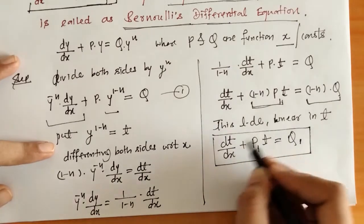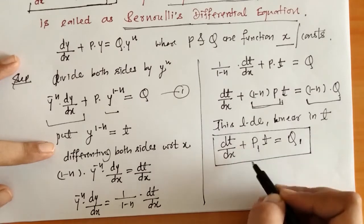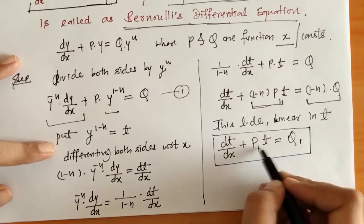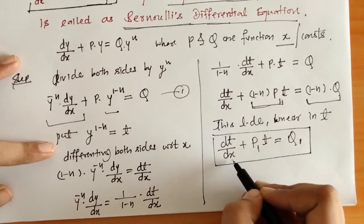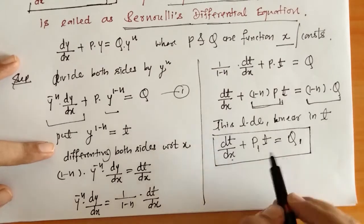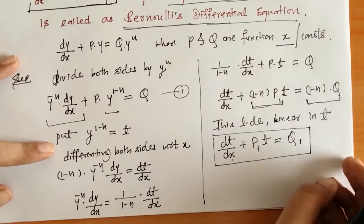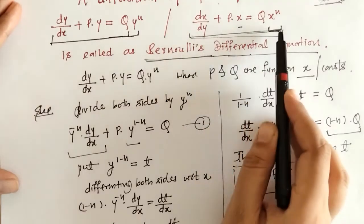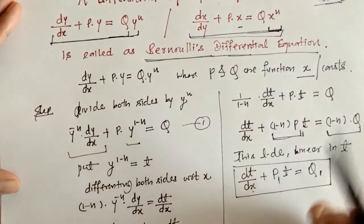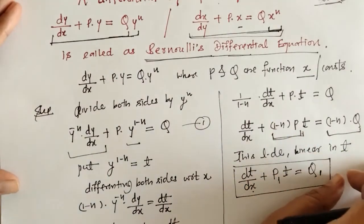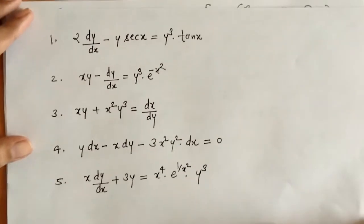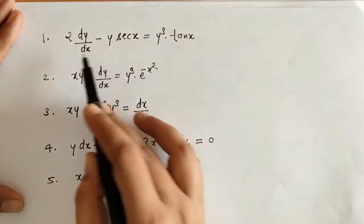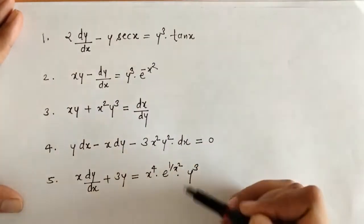Now this is the linear differential equation which is linear in variable t, and P1 and Q1 are functions of x. We can find the solution of this linear differential equation which we have discussed already in previous lectures. Similarly, we can reduce the Bernoulli's differential equation in the other form to a linear differential equation by the same process. Let us now have a look at some Bernoulli's differential equation examples.